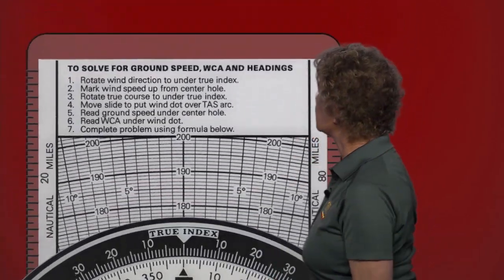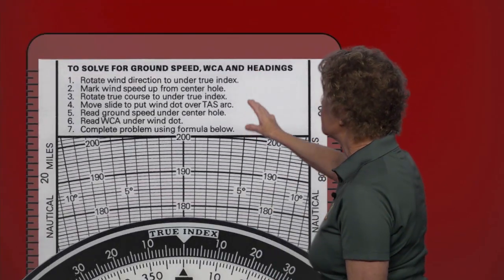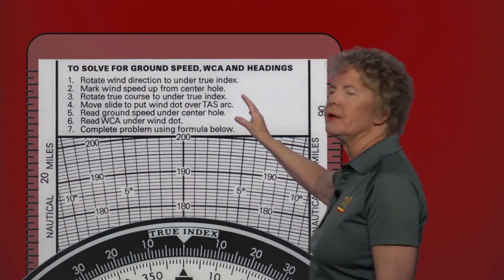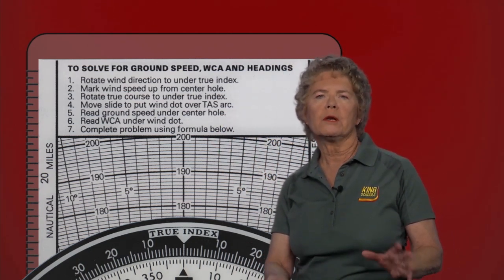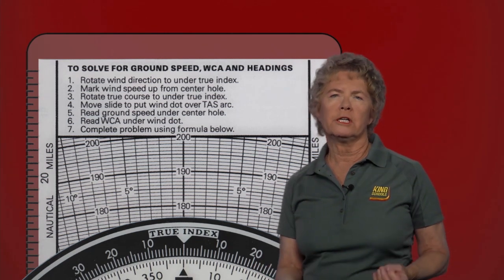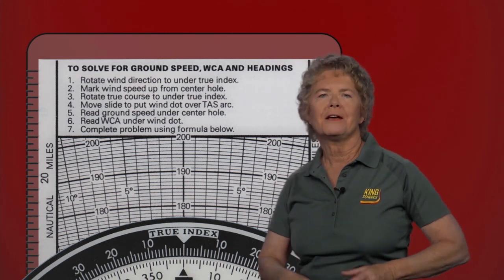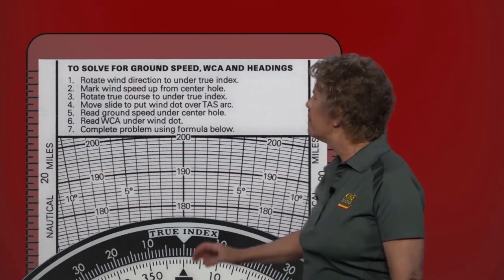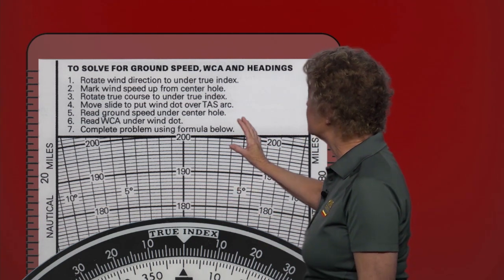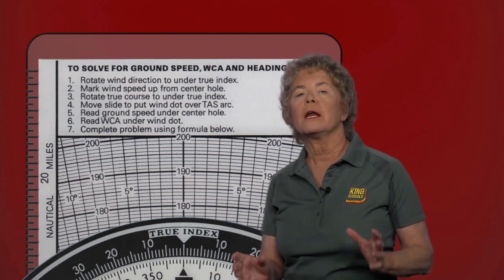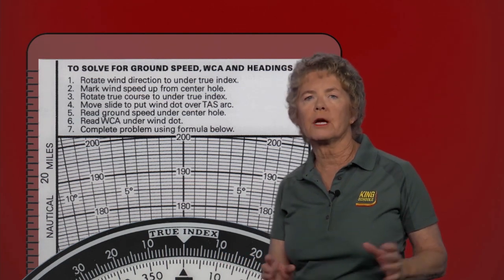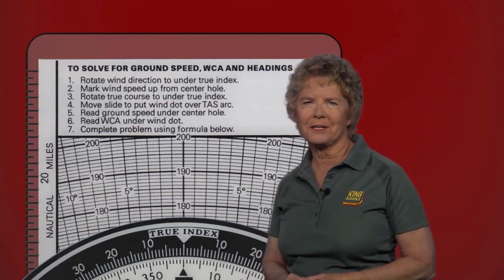Up at the very top of the flight computer on the wind side, there are some directions that you can follow along with and step through on exactly how to work a wind problem in order to determine ground speed and your wind correction angle. That's what this side of the flight computer is designed to tell us: what our ground speed is and how many degrees of wind correction angle we're going to have to carry.